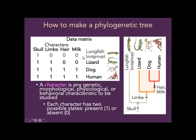In this data matrix, we've picked characters skull, limbs, hair, and milk, and the groups are lizard, dog, and human, using lungfish as an outgroup. We pick simple traits where you either have them or don't. The lungfish has a skull but no limbs, hair, or milk. The lizard has a skull and limbs but no hair or milk. The dog and the human have all four.